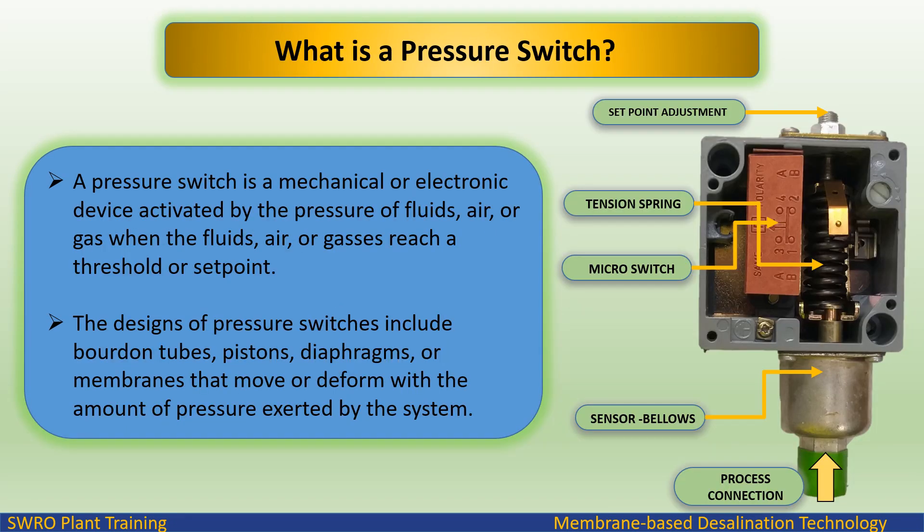A pressure switch is a mechanical or electronic device activated by the pressure of fluids, air, or gas when the fluids, air, or gases reach a threshold or set point. The designs of pressure switches include Bourdon tubes, pistons, diaphragms, or membranes that move or deform with the amount of pressure exerted by the system.